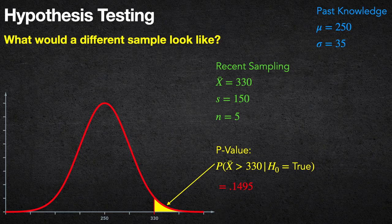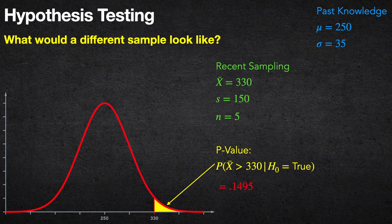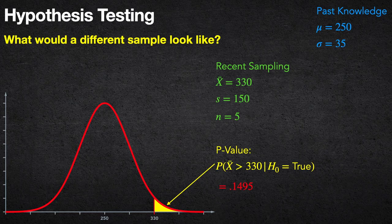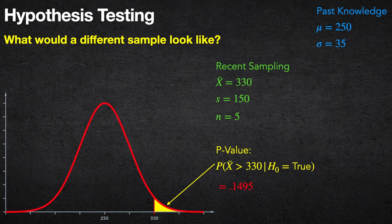We get the probability that x̄ > 330 is 0.1495. Note that 0.1495 comes from the t-distribution, not the z-distribution — don't worry about that right now. The point is: even if we keep the mean the same, changing the sample size and sample standard deviation affects the result. Now we're saying that 15% of the time we'd expect to sample 5 people and get a mean of 330 — not that unlikely, so we have more strength of belief in our null hypothesis.